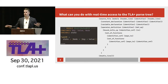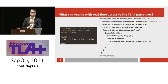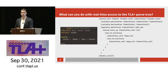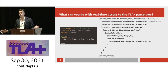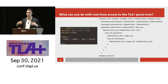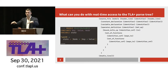This is just to kind of plant some seeds in your imagination: what would you do if you could have access to the TLA+ parse tree in real time as the user was typing, even if there were parse errors? You can get a pretty good tree. Imagine you were writing a program that sat somewhere in the editor in some extension and you had full access to the parse tree. You could query, you could do all this stuff. Think about what kind of tools you could create.